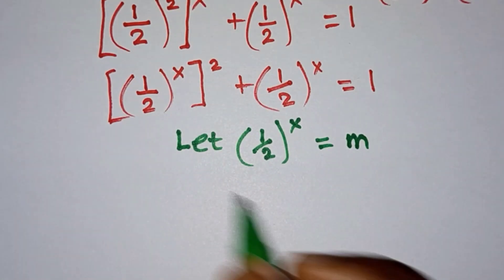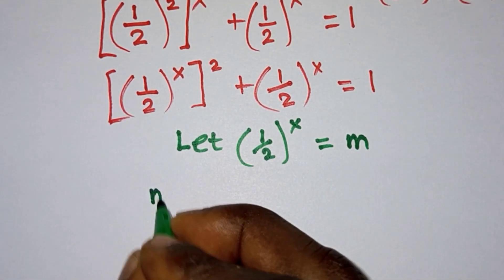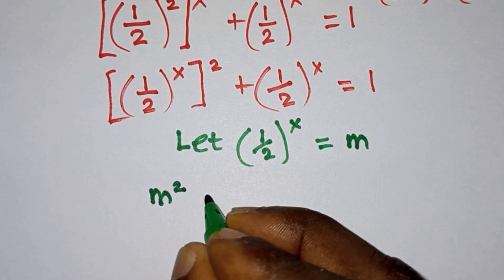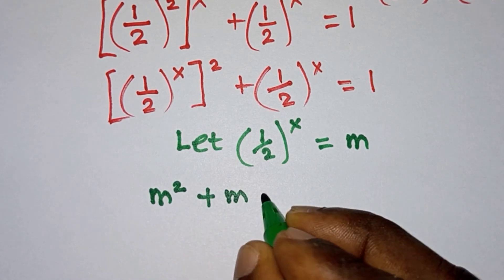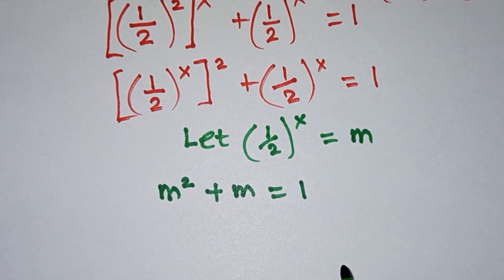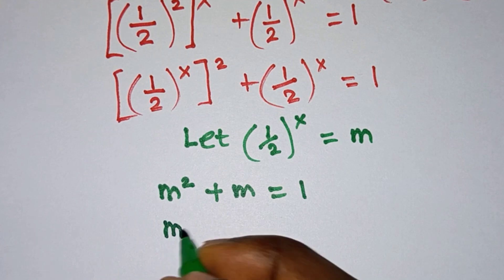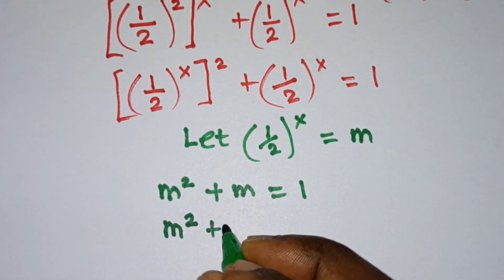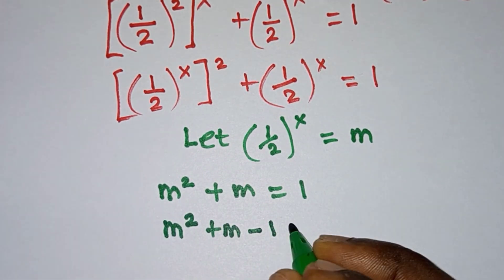So the equation now becomes m^2 + m = 1. And this is a quadratic equation. To solve any quadratic equation you need to equate everything to 0, so we have m^2 + m - 1 = 0.